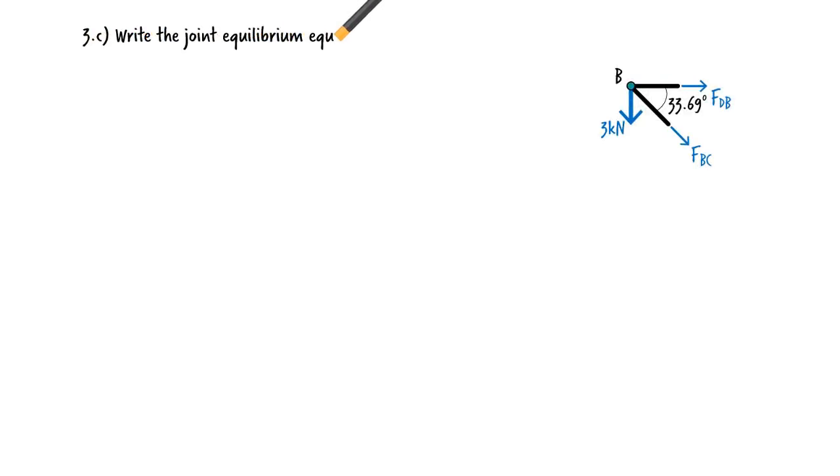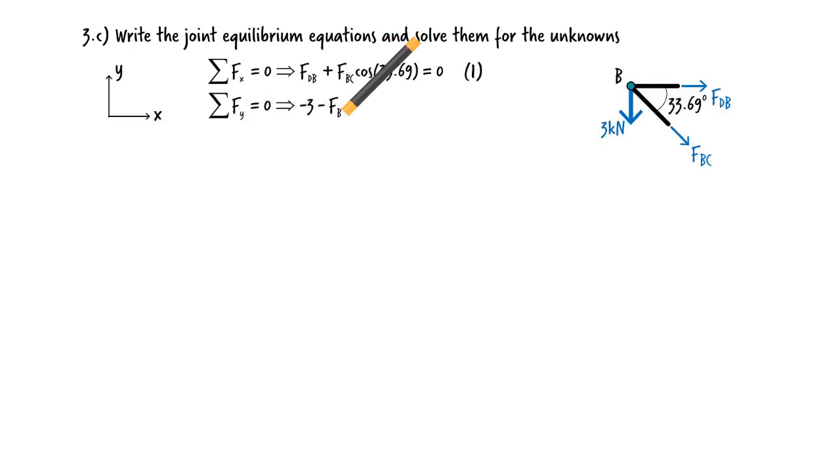Now we can write the joint equilibrium equations. We have two of them. The sum of the forces in the x direction must be zero. The sum of the forces in the y direction must be zero. Using these equations, we can easily determine FBC and FBD.